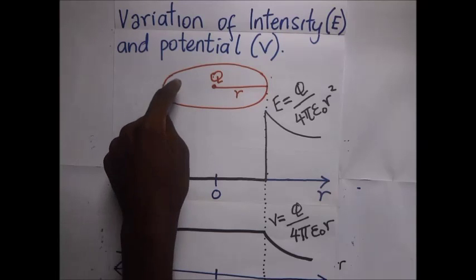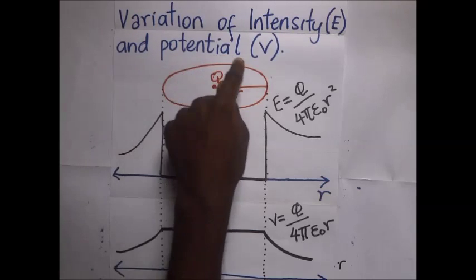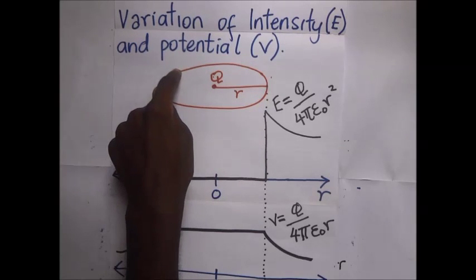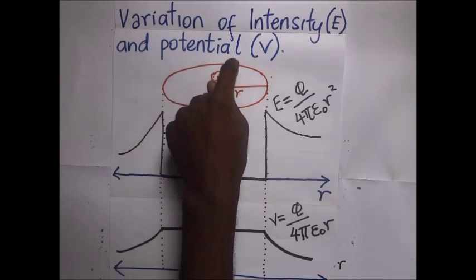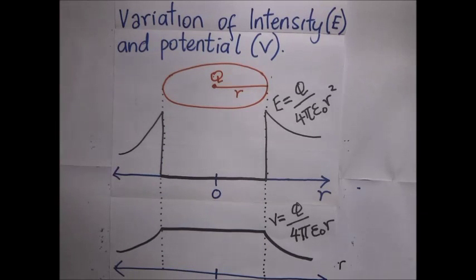If this was an equipotential surface, it would mean that the work done in moving a particle from this point to that point along the equipotential surface is zero.